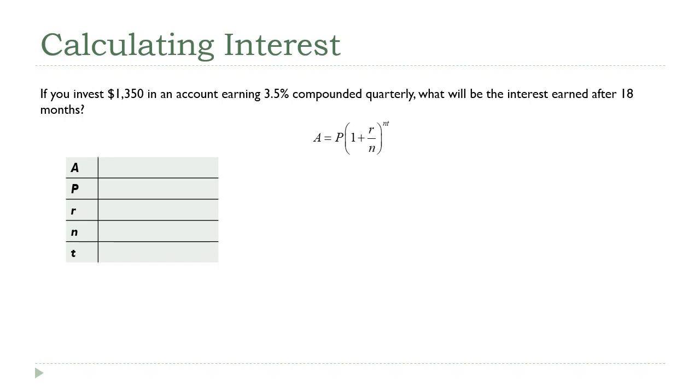Reading through the question, we're going to invest $1,350, that's P, the initial amount. The interest rate is 3.5%. I'm immediately going to turn that into a decimal—we're never going to use the percentage value. So I'll put 0.035 in there for r.